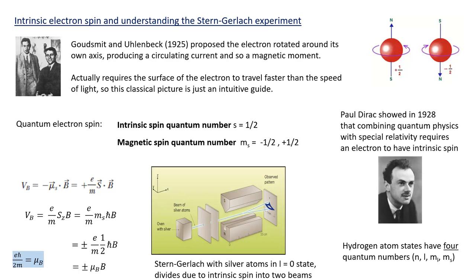In summary, we've learned about the splitting of spectral lines due to a magnetic field — the Zeeman effect — which is due to different values of the magnetic moment coupling to the magnetic field by different strengths, causing a splitting of energy levels and spectral lines. We've seen the Stern-Gerlach experiment, which presented a mystery because it showed an even number — two — of possible deflections. That was resolved by introducing the intrinsic quantum electron spin. Thanks for your attention and I'll see you soon.